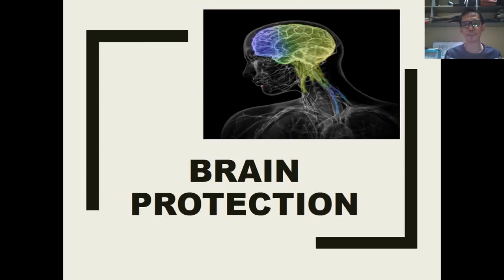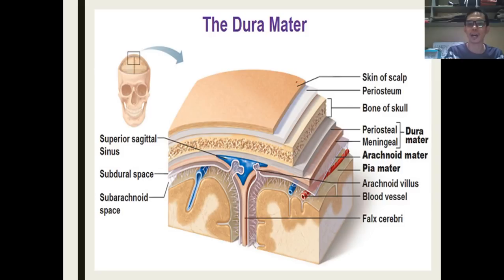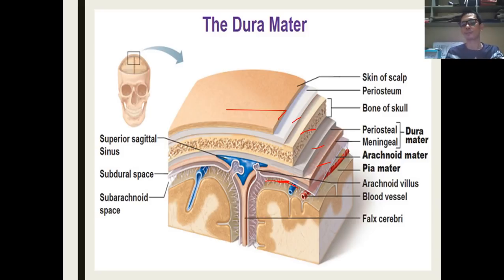The brain is made up of nervous tissues which are soft and when damaged, are irreplaceable. In order to protect the brain, the skull is made up of several layers that cover the brain. There is also cerebrospinal fluid that lessens the force of whatever impact occurs on the brain. The skull is the one that protects the brain because of its soft nature.